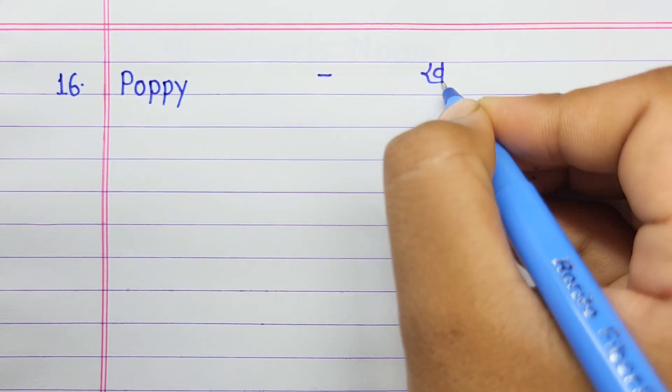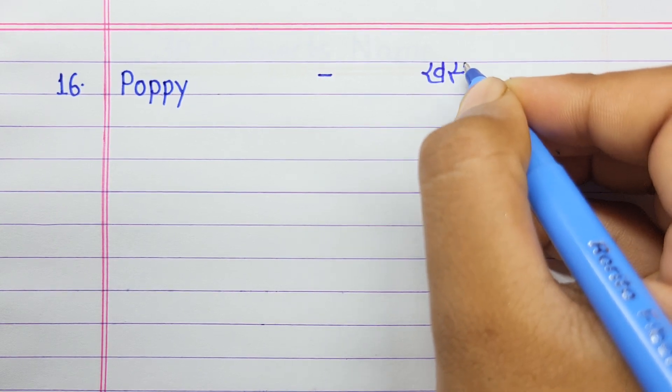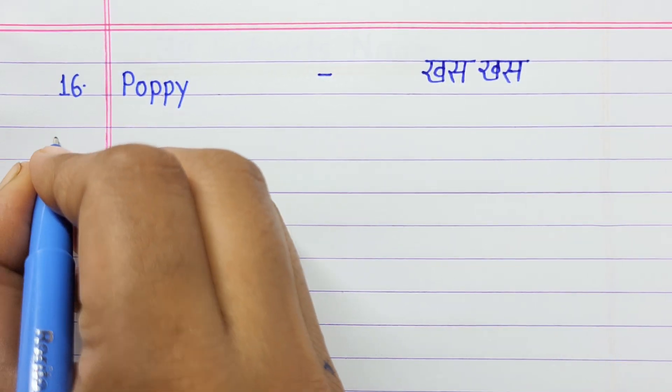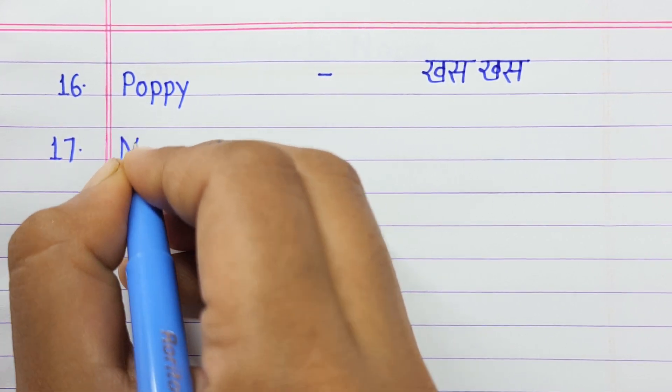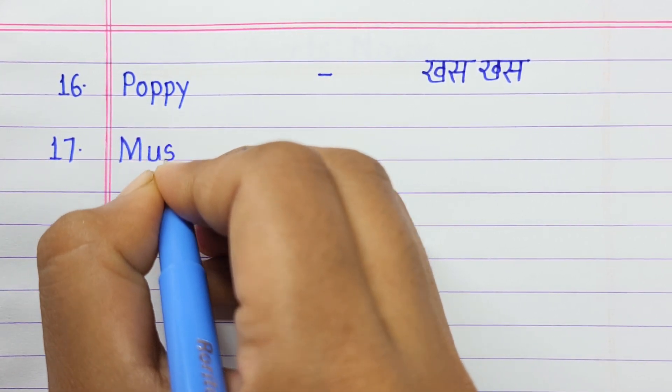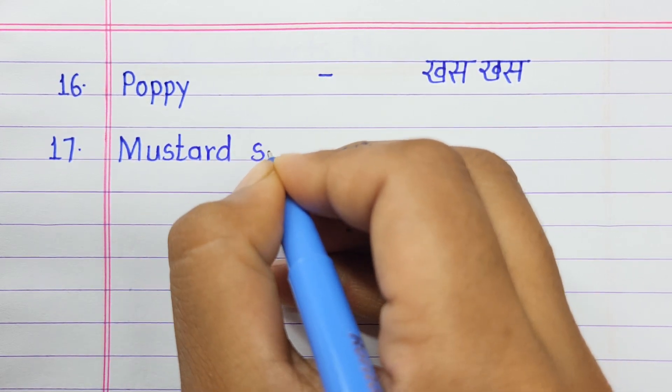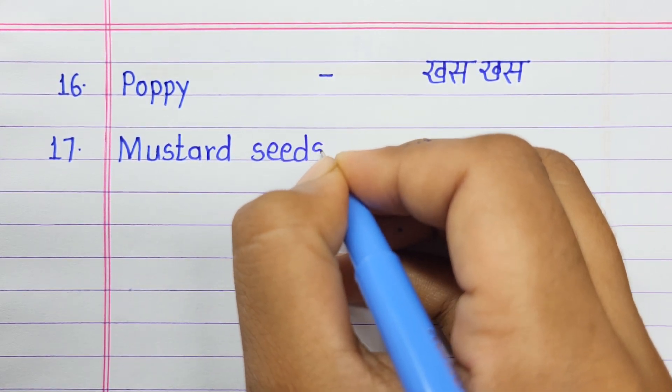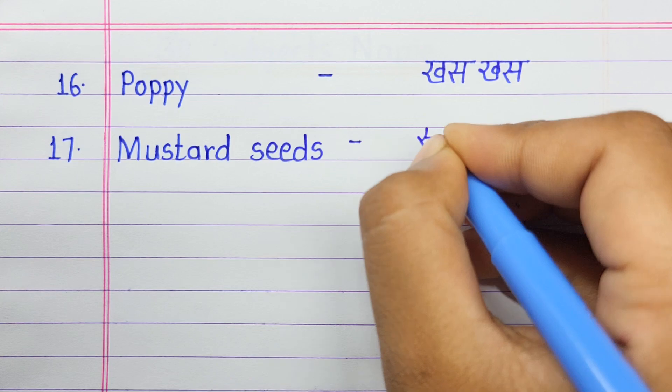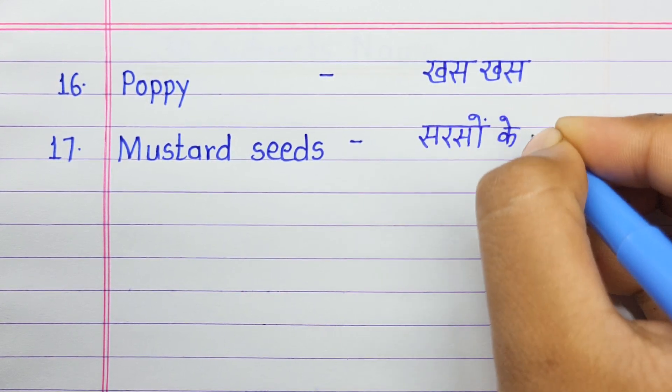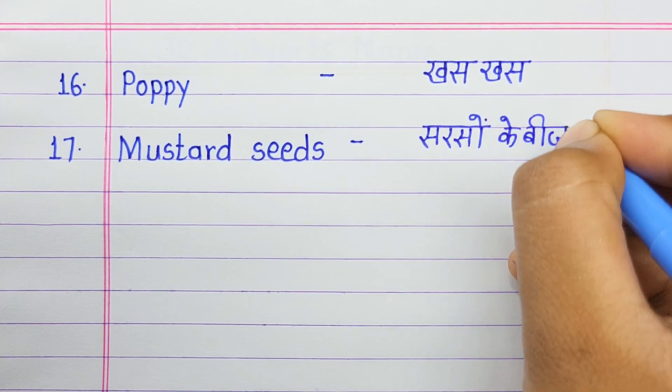Number sixteen: Poppy means khas khas. Number seventeen: Mustard seeds means sarsu ke beej.